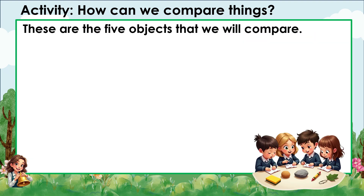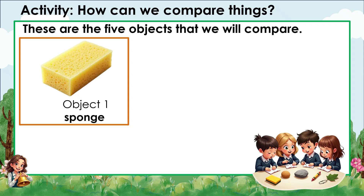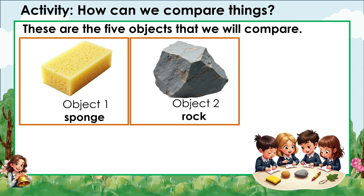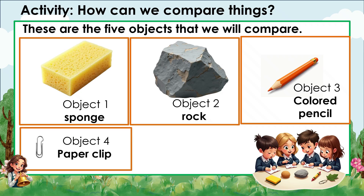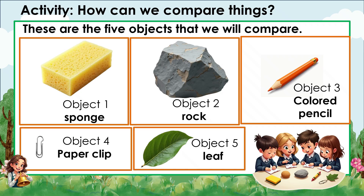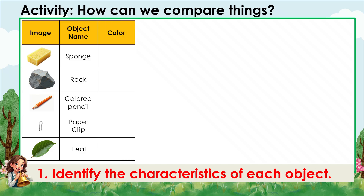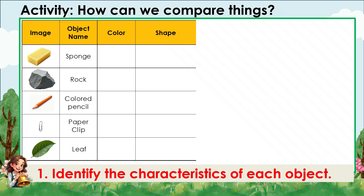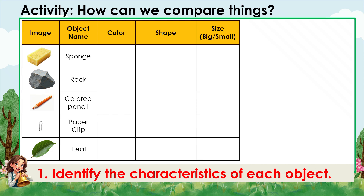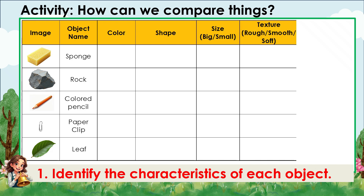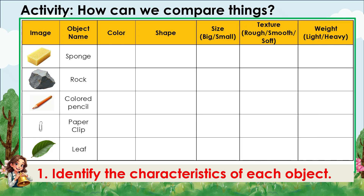How can we compare things? We have five objects for this activity: Object one — sponge. Object two — a rock. Object three — a colored pencil. Object four — a paper clip. And a leaf. We need to identify their characteristics so we can sort them out according to their color, shape, size (big or small), texture (rough, smooth, or soft), and weight (light or heavy).